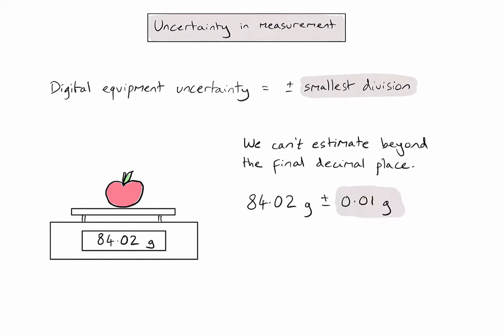Again, once I've done that, I need to make sure that the decimal places in my reading must match the decimal places in my uncertainty. In this case, it's 2.